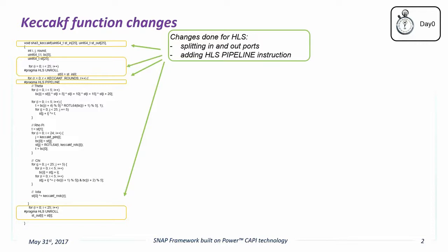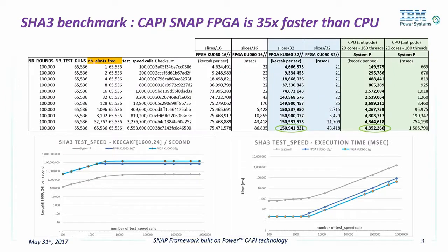With unroll, we make parallel instances of a code segment whose results don't affect the next iteration, which is a common case in loops. The pipeline function allows a portion of code to begin an operation before the previous iteration completes. The results were outstanding. In less than two weeks, with minimal changes to the original source code, we had the CAPI Snap implementation of the Keccak algorithm running 35 times faster than the processor version. That's not comparing the FPGA to a single thread — we obtained the 35 times speedup compared to 20 cores running a total of 160 threads. This performance improvement was consistent across all sets of parameters we fed into the engines.